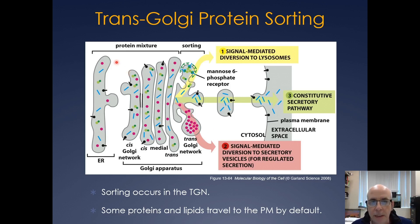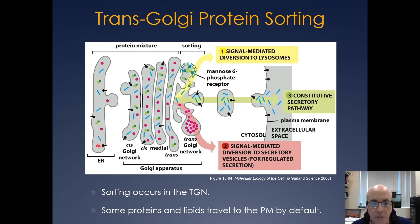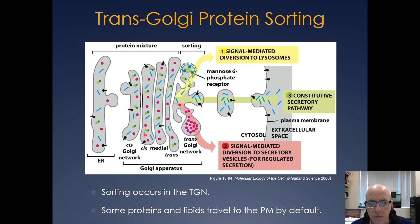So ultimately in the whole sorting process, most all secreted proteins are made and translocated into the endoplasmic reticulum. They'll bud off in a COP2 vesicle, and then they form the ERGIC and the vesicular tubular clusters. They'll go on to become the Golgi, and then they'll go through the cis, medial, and trans Golgi where all the glycosylation is occurring.